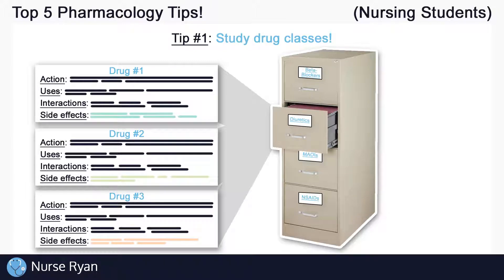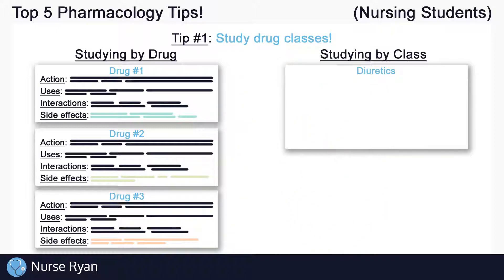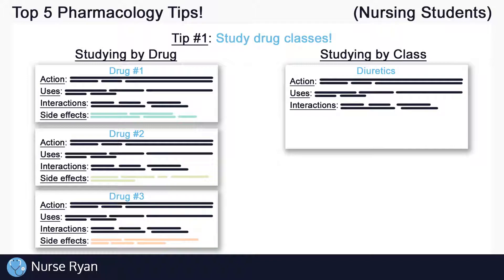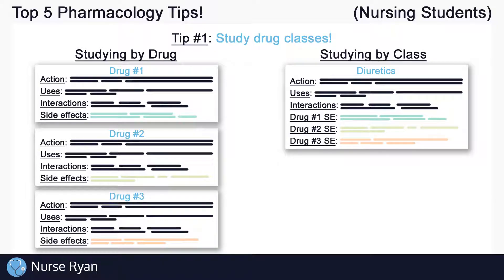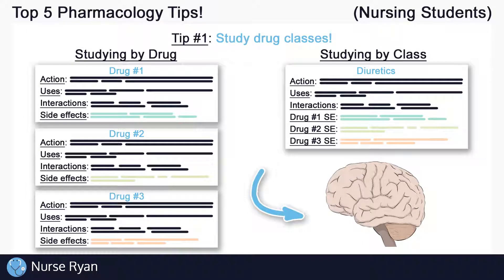A lot of students study and make drug cards like this on the left — they study each of the three diuretics and all of their information separately from each other, usually using three drug cards with a lot of repeating information. But if we switch to studying the drug classification, we can group all of the actions, uses, and interactions into one card. All that's left is what sets the different drugs apart, so that extra info can go right here.